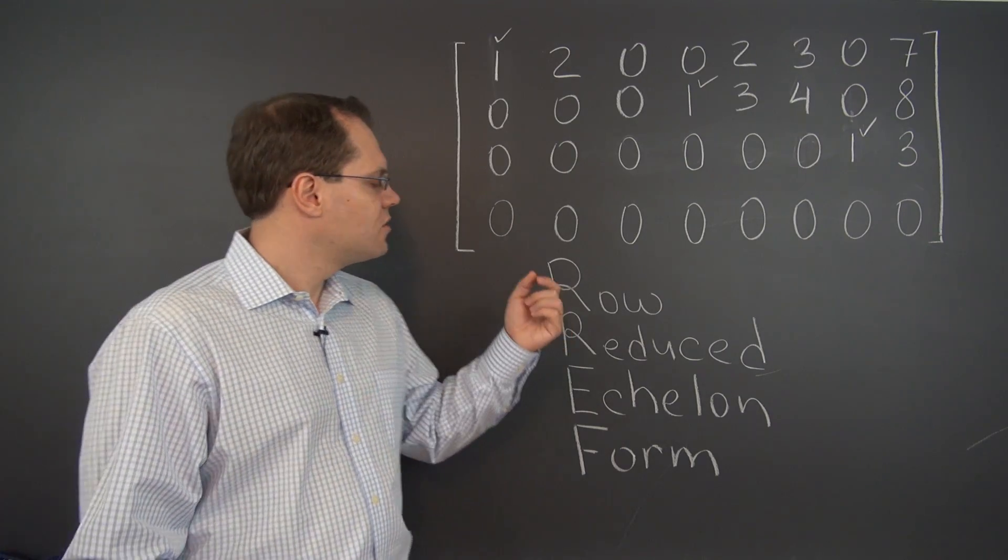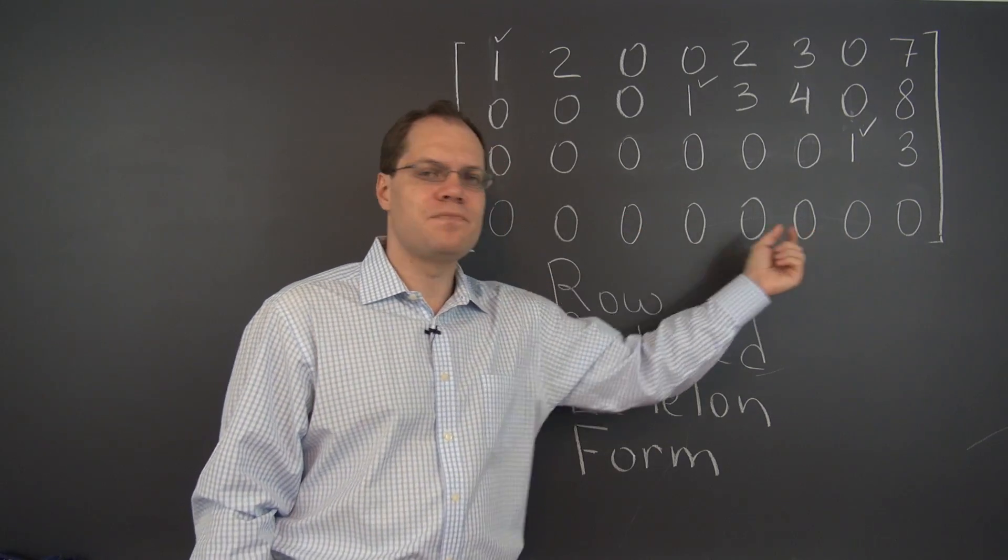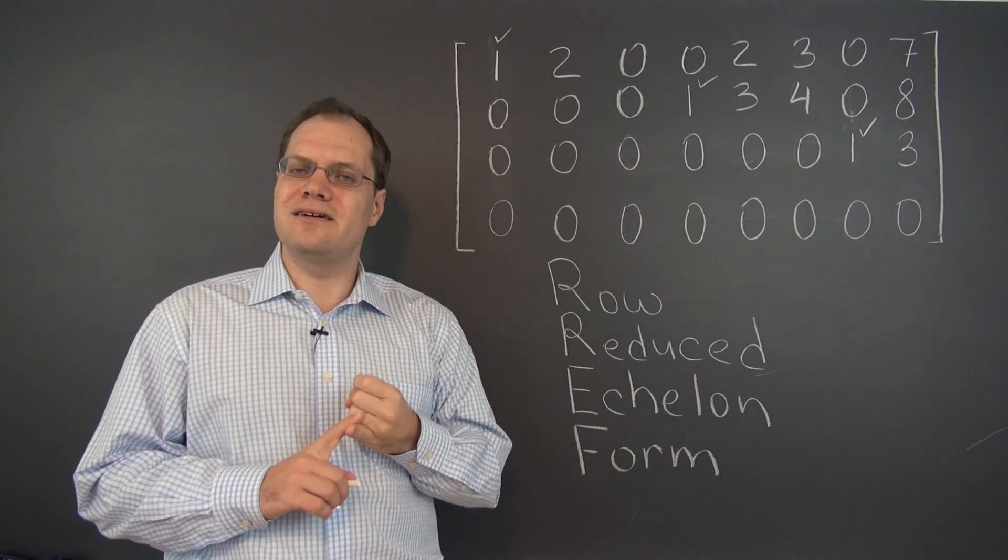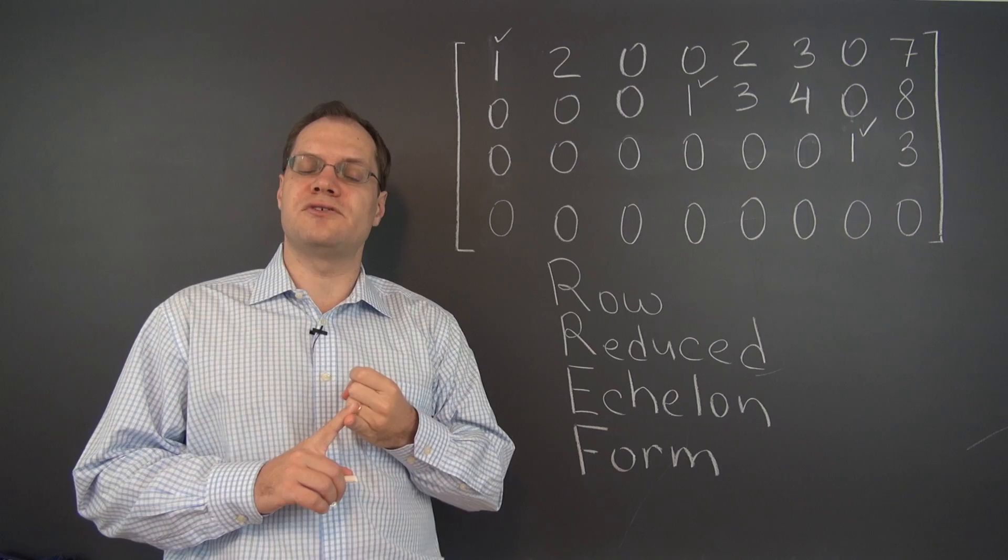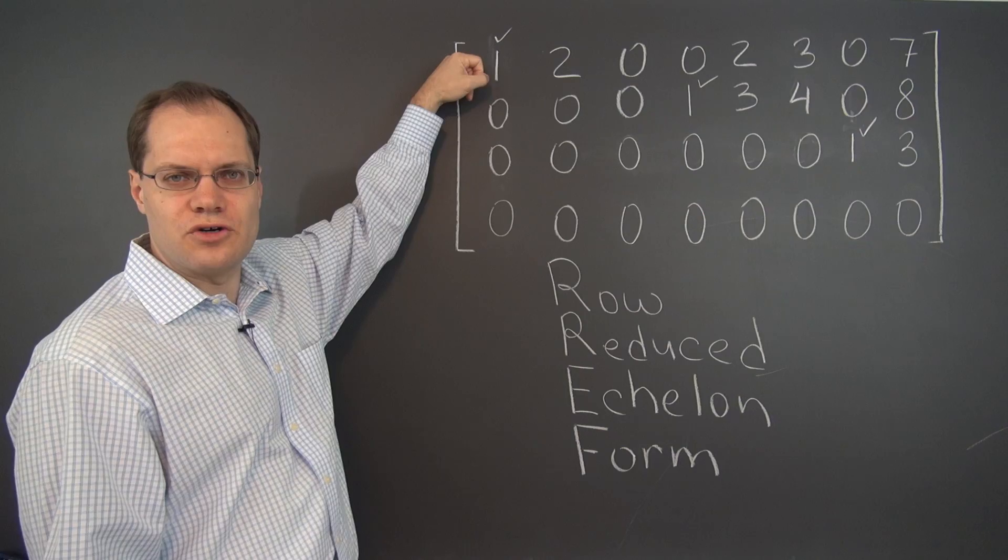From the column perspective, row reduced echelon form is characterized by having these pivot columns. These are columns that have a single non-zero entry. Those entries are called pivots. The pivots appear in consecutive rows starting with the first row.